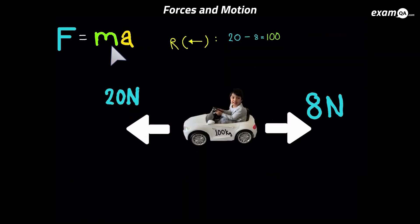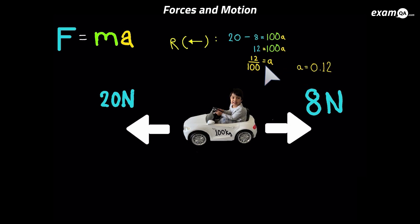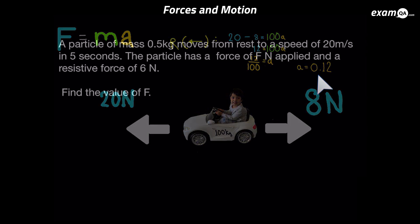And the resultant of those forces is equal to MA. So our M here is 100 this time. And A, of course, we don't know. We're trying to work that out. Let's simplify that. And lastly, make A the subject. And of course, we get A equals 0.12. So as we expected, the acceleration has reduced since now we've got my son in there.